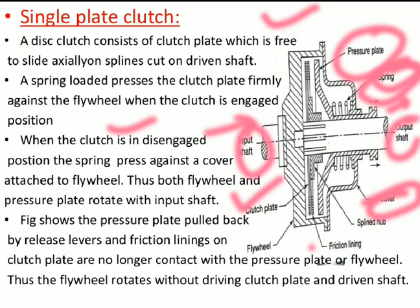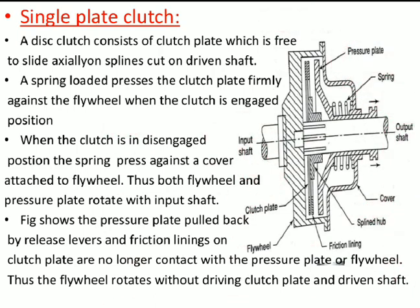In simpler words: when the clutch is in disengaged position, the spring and pressure plate are connected to the output shaft. When the clutch moves to the engaged position, through the help of the spring, the pressure plate comes in contact with the flywheel. Since the flywheel is moving due to engine power, it helps the pressure plate to start rotating in the same direction, and thus transmits power to the output shaft. That is the general phenomenon of single plate clutch.